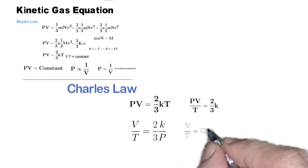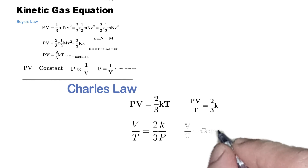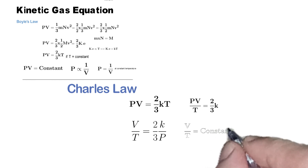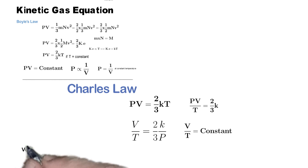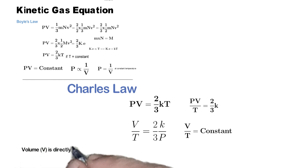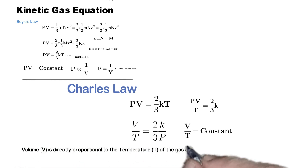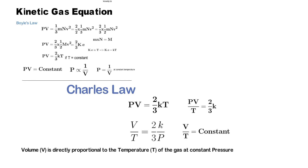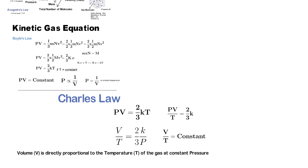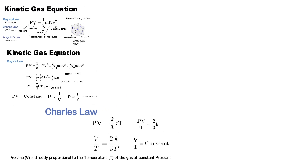Here, 2/3 is a constant, k is a constant, and if we keep pressure constant, then the whole term on the right-hand side becomes constant, giving us V/T = constant, which is Charles' law. According to Charles' law, if we keep the pressure constant, the volume of the gas is directly related to the temperature. If we increase the temperature of the gas, the volume of the gas will also increase.